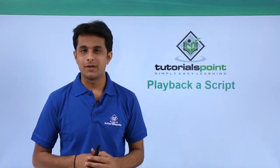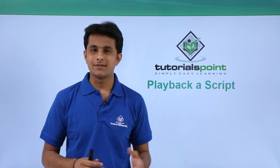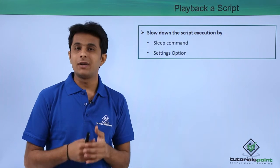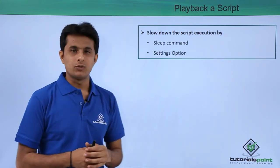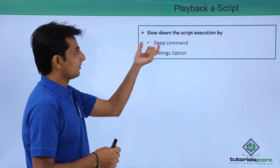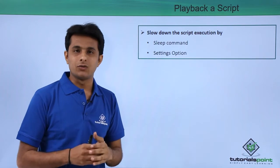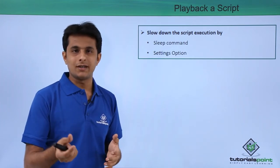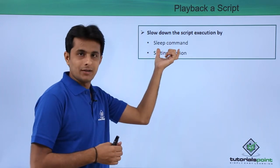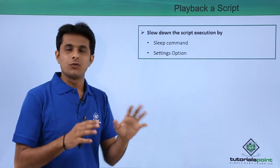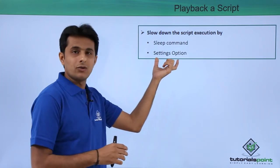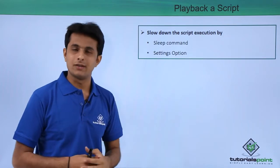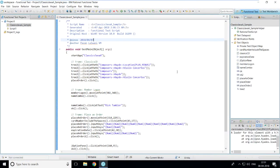After successfully recording a sample application, it's time to play back the script. During playback, we'll look at some settings and the automatically recorded code. We'll try slowing down the script execution because normally it runs very fast, making it difficult to follow. We'll slow it down by inserting a sleep command and also by going to the settings options to execute each step at a slower pace. These two options will be demonstrated in this video.